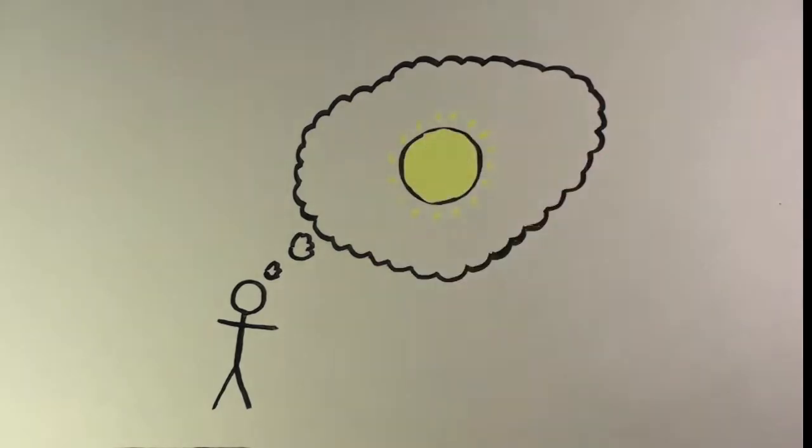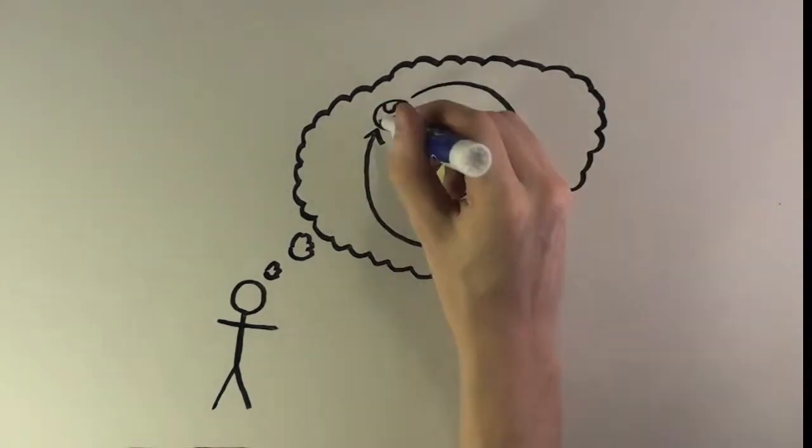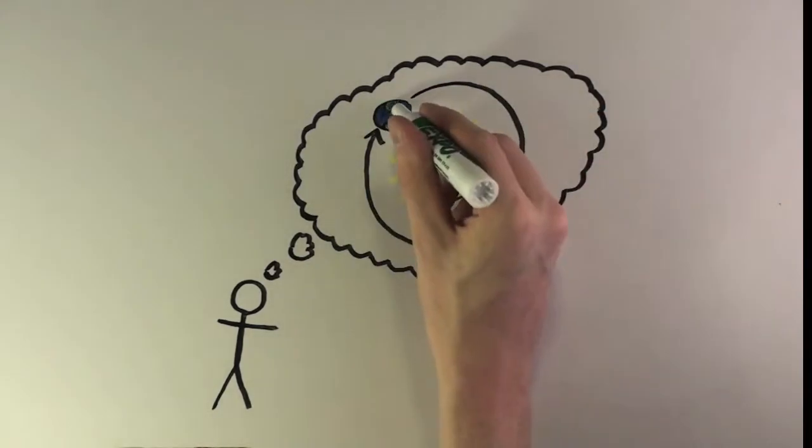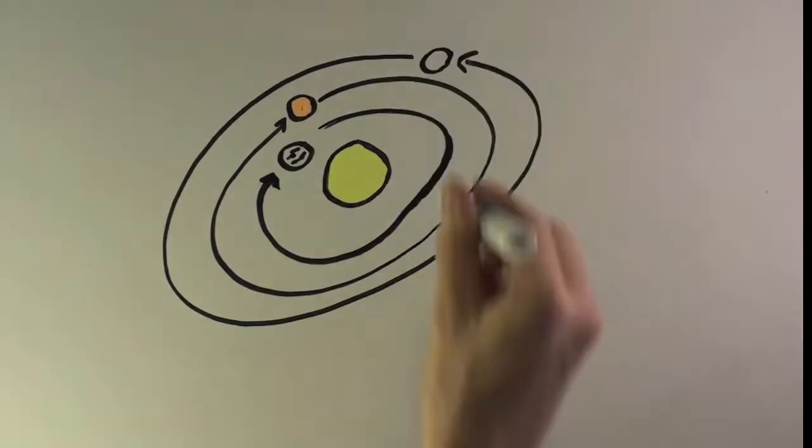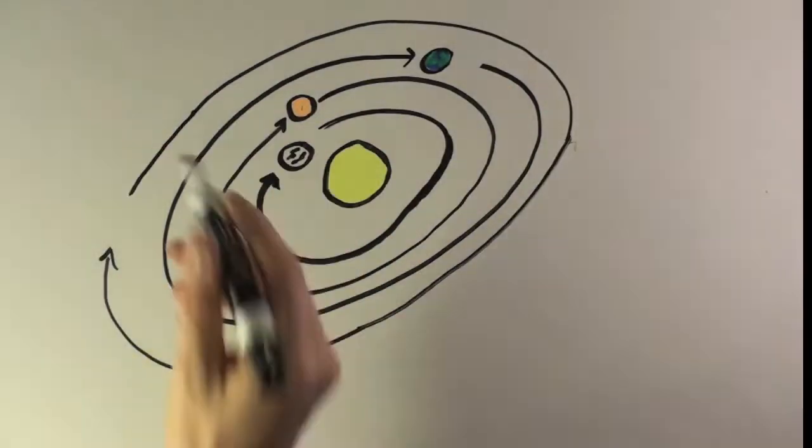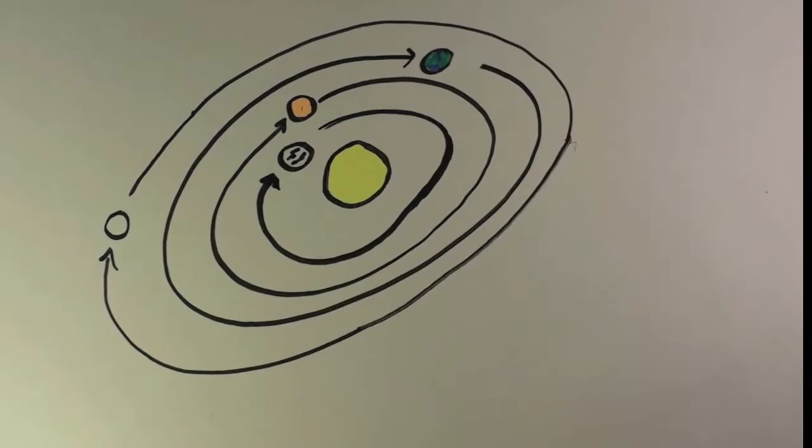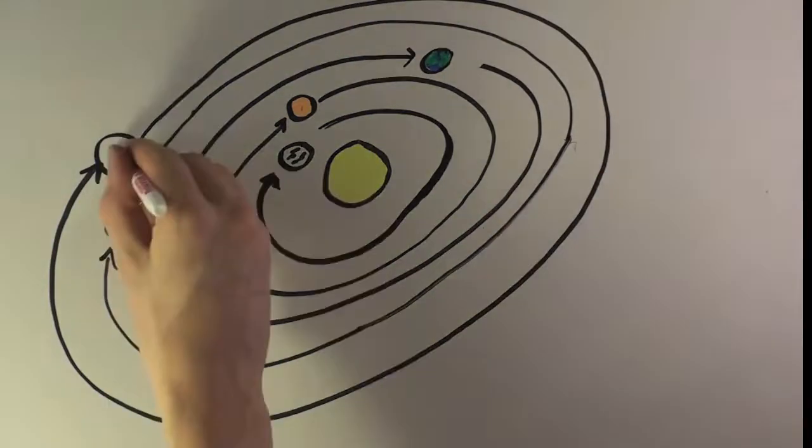This is the story of how humans came to the conclusion that our solar system is heliocentric. A heliocentric solar system is one in which the Sun is the center of gravity, while the Earth and all the planets orbit around it.